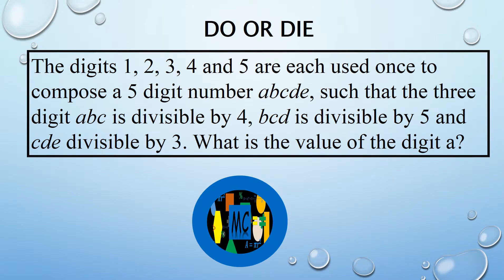The digits 1, 2, 3, 4 and 5 are each used once to compose a five-digit number such that the three-digit A-B-C is divisible by 4, B-C-D is divisible by 5, and C-D-E is divisible by 3. What is the value of the digit A?